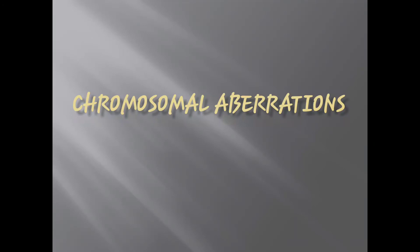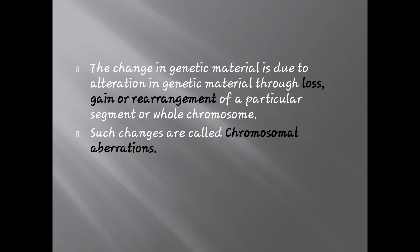Hello students. In this video we shall be discussing the topic of chromosomal aberrations. Chromosomal aberrations are the changes which are taking place in the genetic material, that means in the chromosomes. The change in genetic material is due to alteration through either loss, gain, or rearrangement of a particular segment of chromosome or of whole chromosome, and such changes are called chromosomal aberrations.